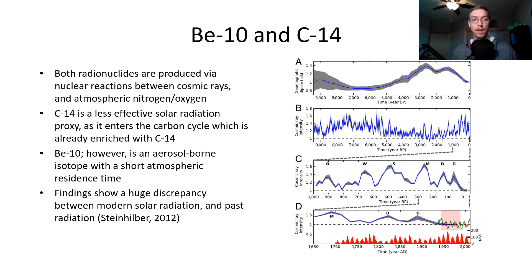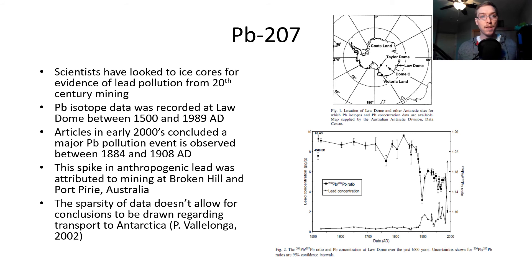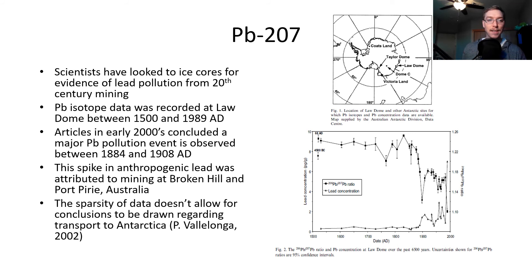C-14 is a less effective solar radiation proxy as it enters the carbon cycle, which is already enriched with C-14. Beryllium-10, however, is an aerosol-borne isotope with a short atmospheric residence time. The findings show huge discrepancies between modern solar radiation and past solar radiation. For lead-207: scientists have looked to ice cores for evidence of lead pollution from 20th century mining. Lead isotope data was recorded at the Law Dome from 1500 to 1989 AD, and articles in the early 2000s concluded a major lead pollution event occurred at the peak of the industrial revolution, attributed to mining at Broken Hill and Port Pirie, Australia.